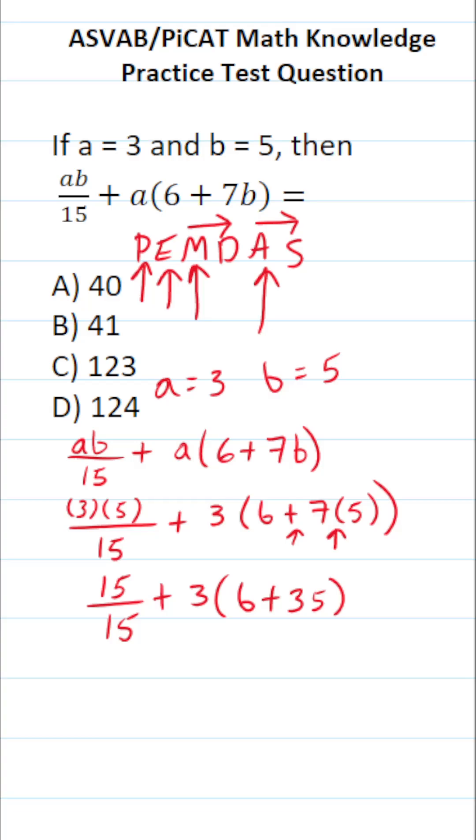We're still working out what's in parentheses. But we can simplify 15 over 15 to be 1 plus 3 times. 6 plus 35 is going to be 41.